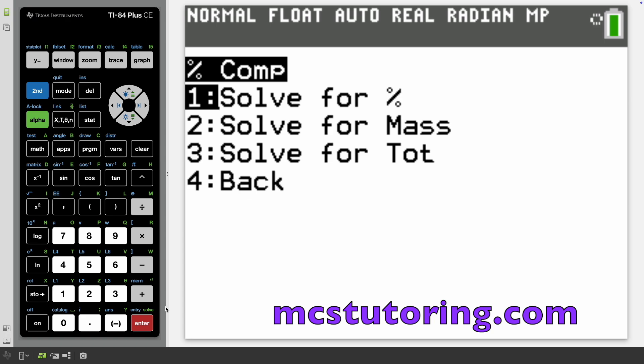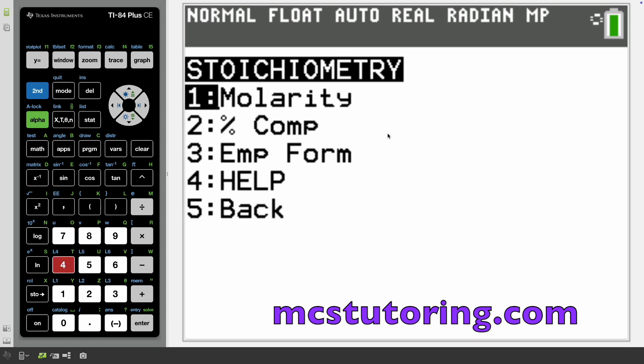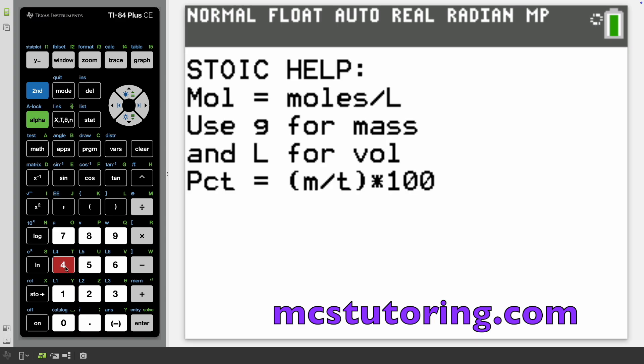We can solve for different things, the mass or the total. Let's go to the help menu. For stoichiometry help, moles is moles per liter. Use G, grams for mass, and L for liter. Percent is mass of the element over total times 100.